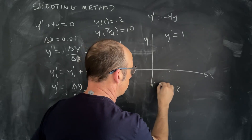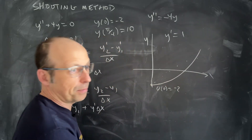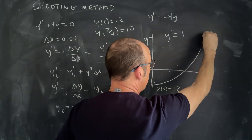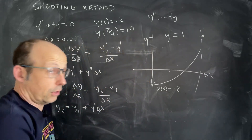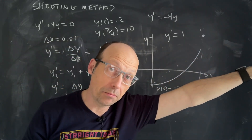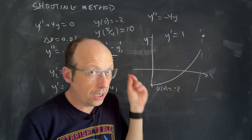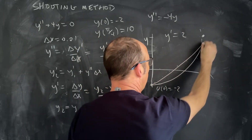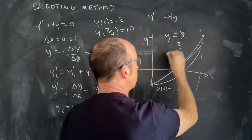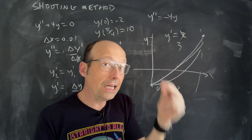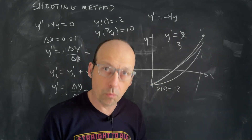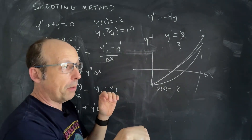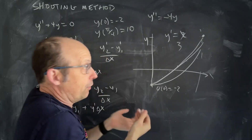With that guessed slope the function goes some way, but it may not hit the target of y equals 10 at the end — I shot and missed. So I change my initial slope and try again: try 2, still missed, try 3, and so on until it works. That's the shooting method — like throwing a ball at a trash can, adjusting your throw until you finally hit it.